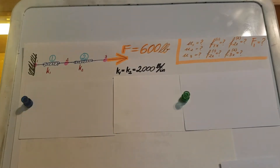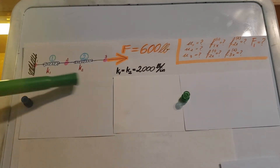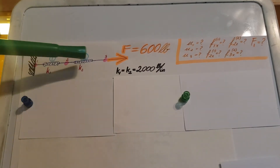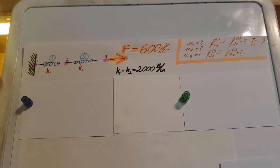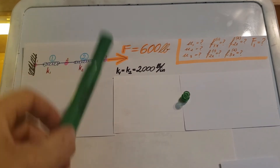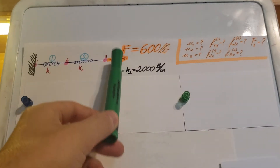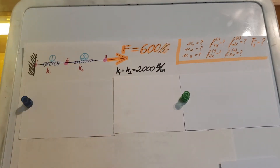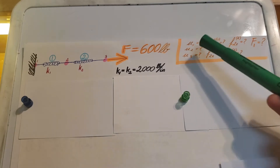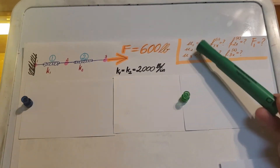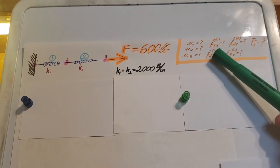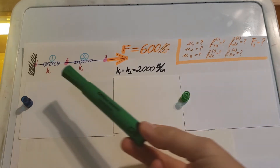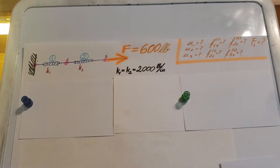This is a finite element problem. We are looking at a spring assemblage as shown here. We have a wall and two elements represented as springs. We have a force applied at this end, F equals 600 pounds. They want us to find, through the direct stiffness method, displacement at points 1, 2, and 3, elemental forces in both elements 1 and 2, and also the reaction at point 1.